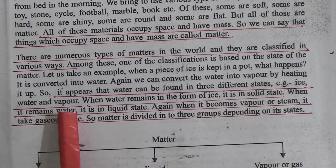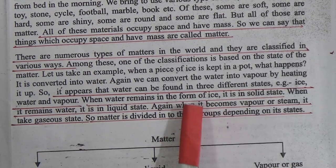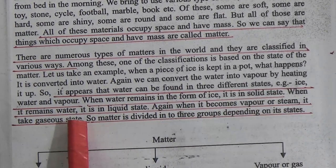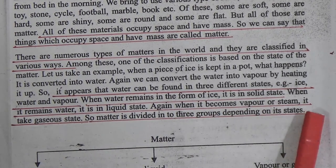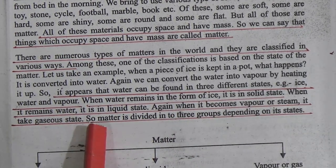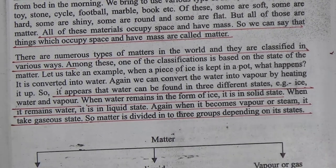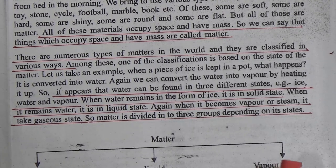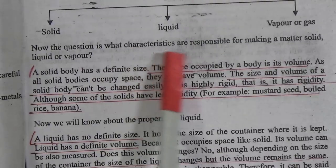When water remains in the form of ice it is solid; when it remains as water it is liquid; and when it becomes vapor or steam it takes gaseous state. So matter is divided into three groups depending on its state: solid, liquid, and gas.